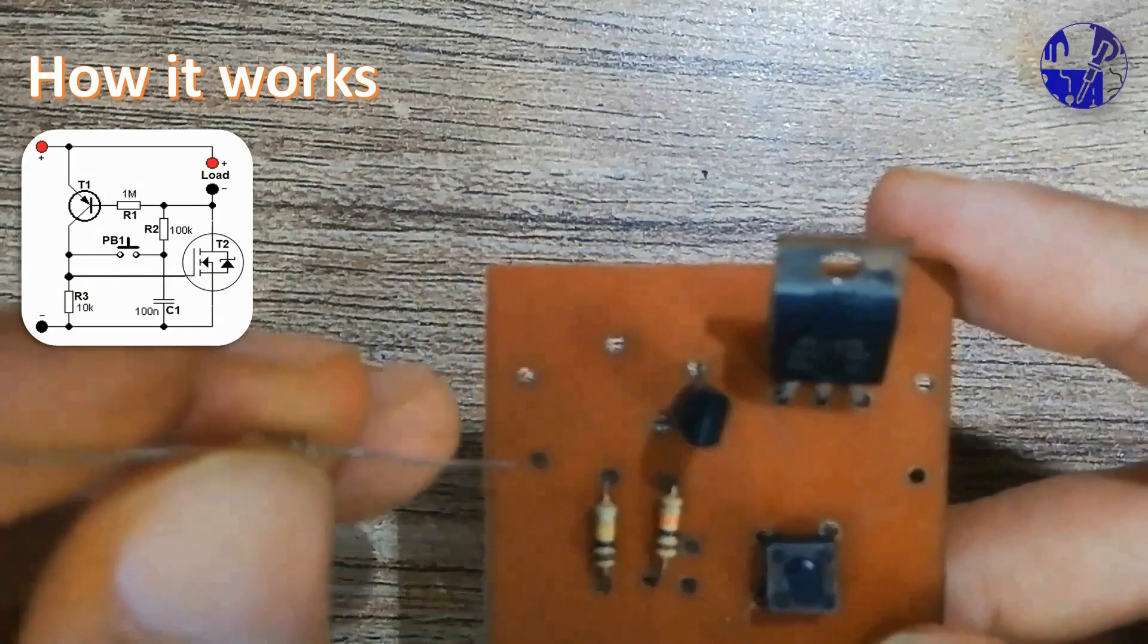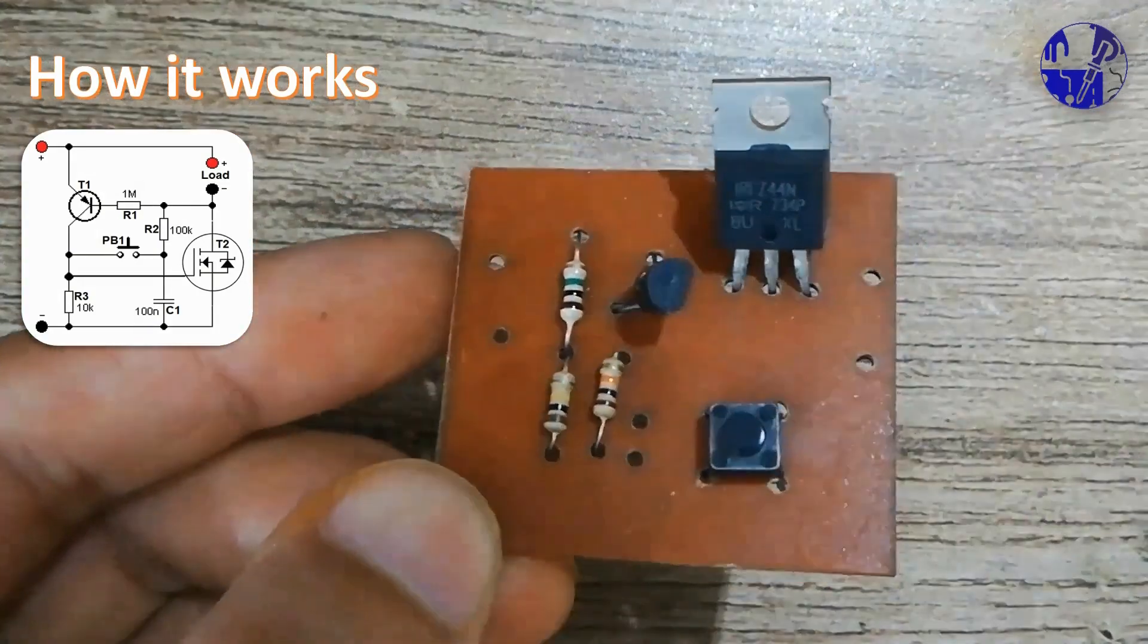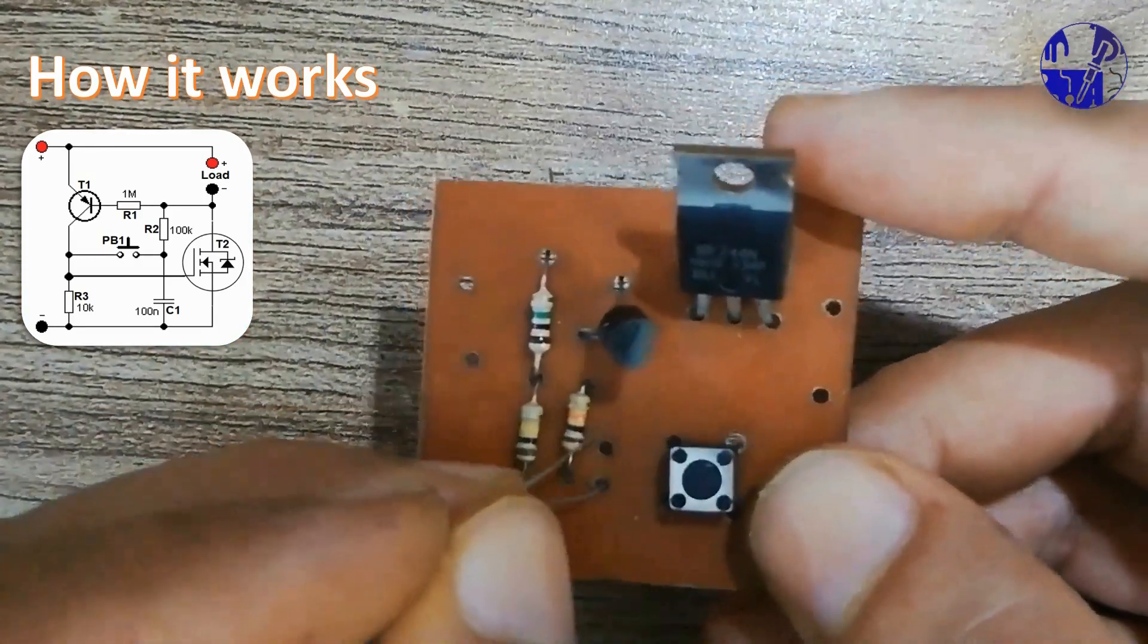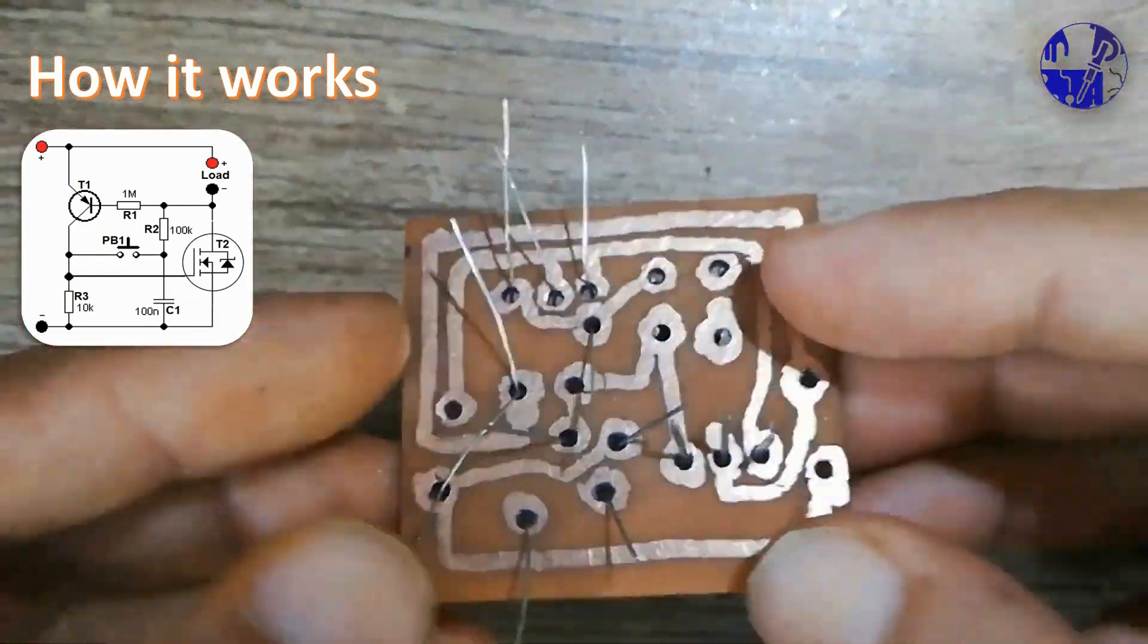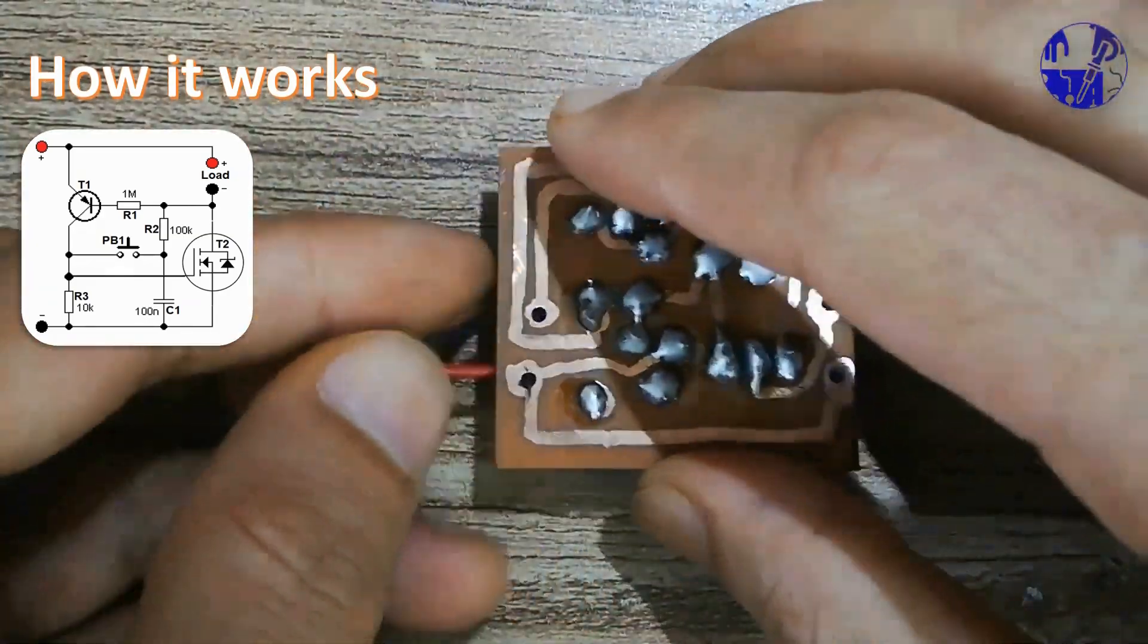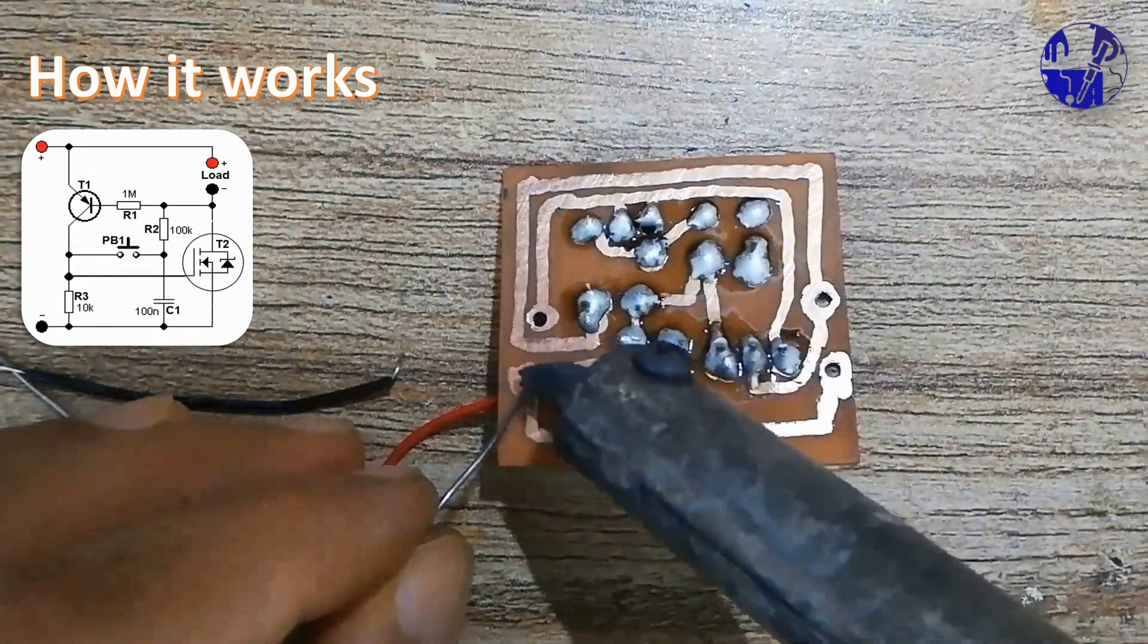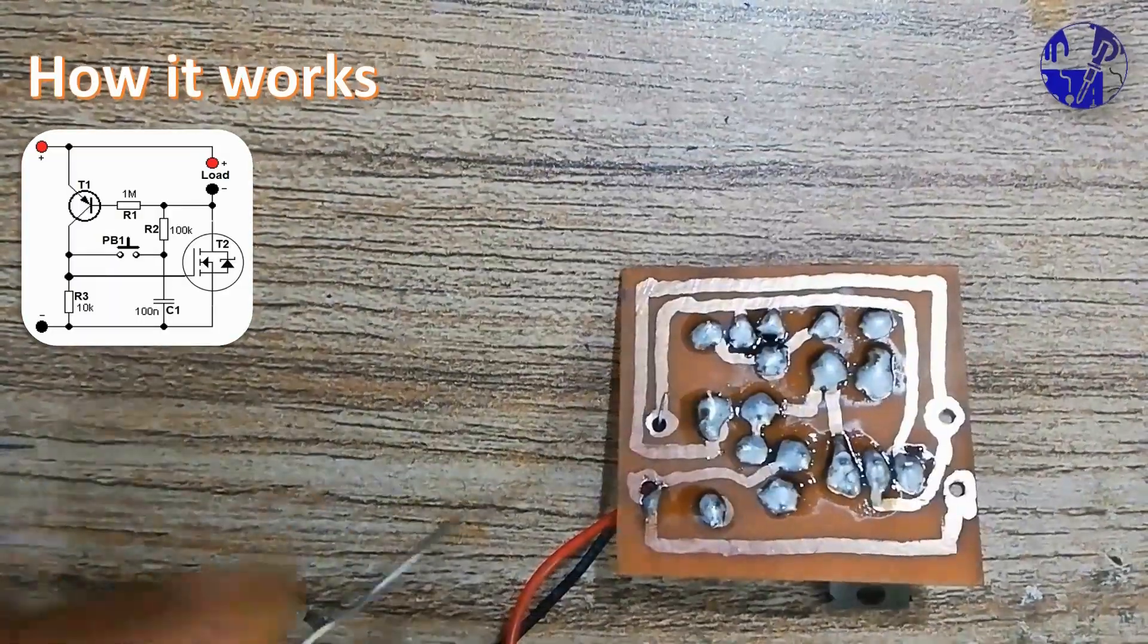The circuit operates based on a straightforward principle. In the off state, the capacitor C1 charges through the load and the resistor R2. When the momentary button PB1 is pressed, the voltage stored in the capacitor C1 connects to the gate of transistor T2. This action opens T2, turning on the load.